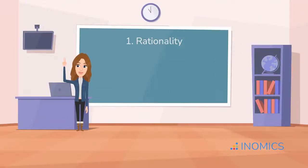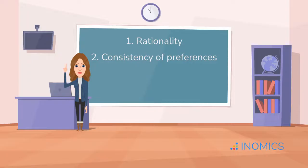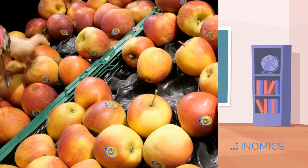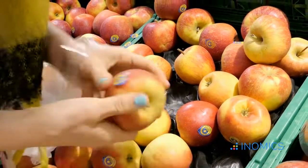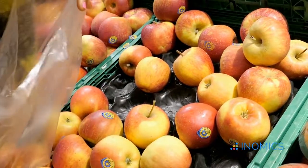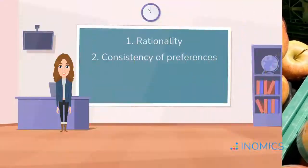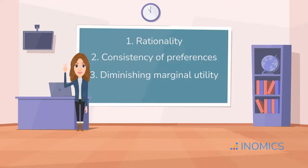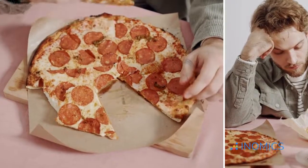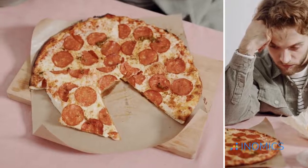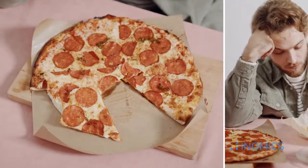Assumption two: consistency of preferences. If you prefer apples to oranges today, you'll still prefer them tomorrow — your preferences don't randomly change. Assumption three: diminishing marginal utility. This one's key. The more of a good you consume, the less additional satisfaction you get from each extra unit. The first slice of pizza? Amazing. The tenth? Eh.